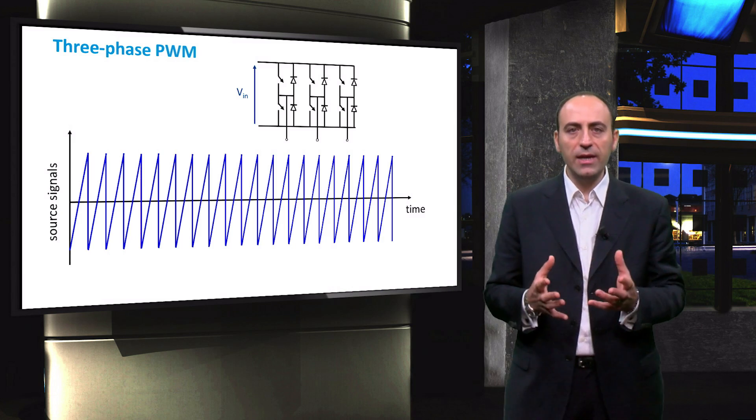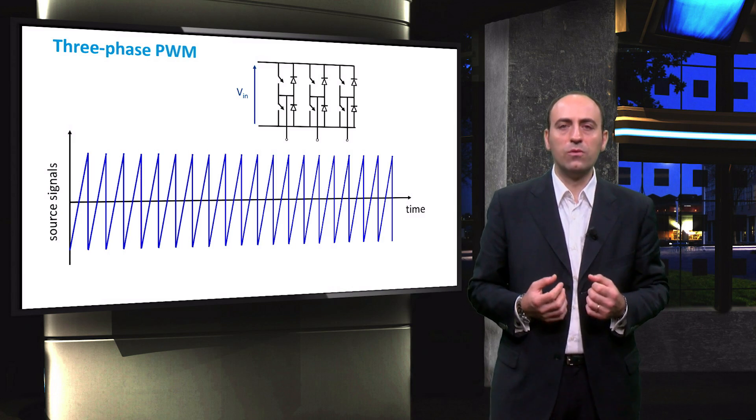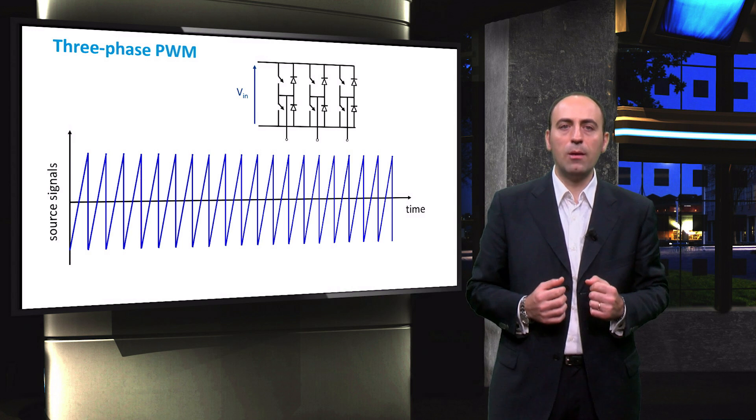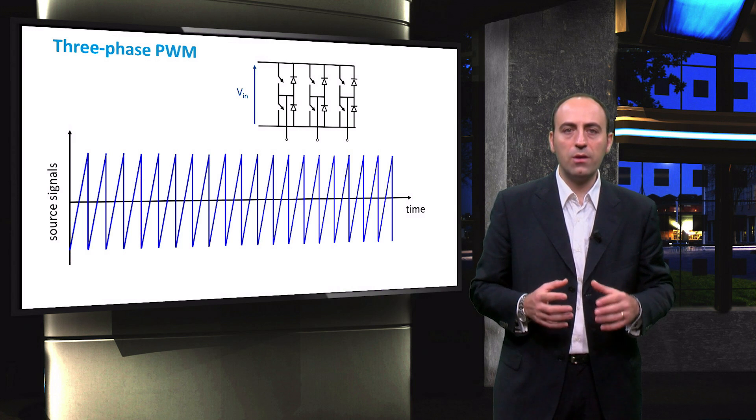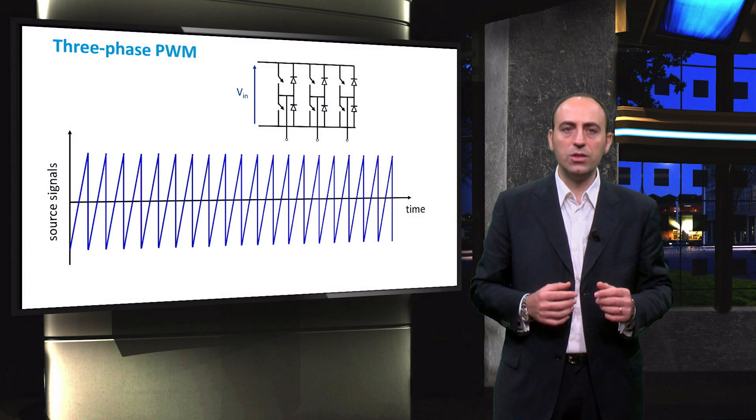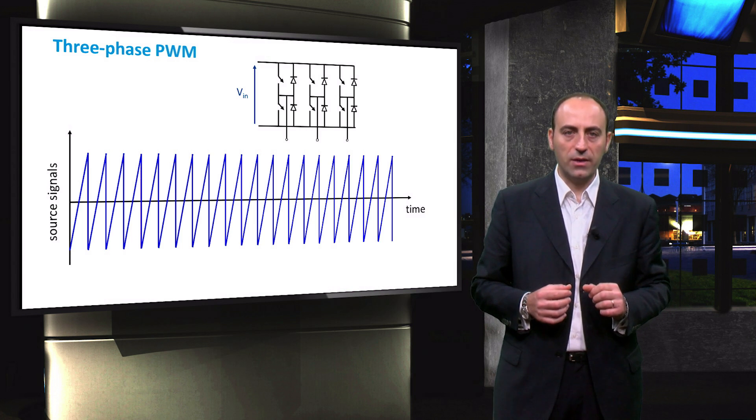Similar to the single-phase inverters, the objective in a pulse-width modulated three-phase inverter is to shape and control the three-phase output voltages in magnitude and frequency with an essentially constant input voltage. To obtain balanced three-phase output voltages in a three-phase PWM inverter, the same triangular voltage waveform is compared with the three sinusoidal control voltages that are 120 degrees out of phase.